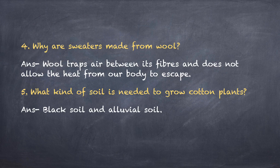Third question: what is meant by shearing? As you all saw in the previous videos, the removing of hair from sheep is known as shearing. Question number four: why are sweaters made from wool? Wool traps air between its fibers, and air is a bad conductor of heat. Hence, this air doesn't allow the heat from our body to escape, which keeps us warm. That's why sweaters are made from wool.